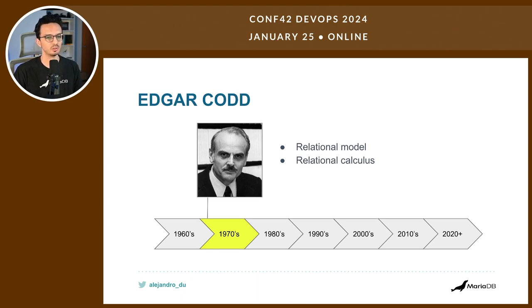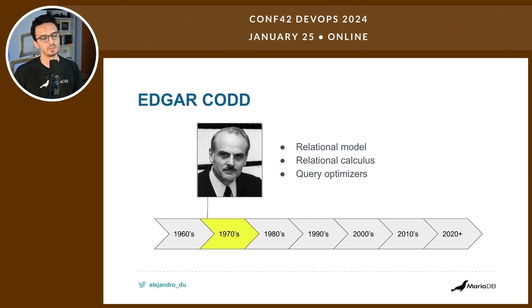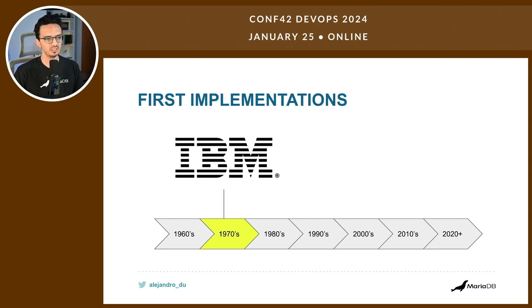Edgar Codd was a mathematician, so he formalized the relational model through relational calculus and relational algebra, which is the basis modern databases use — though they've added more concepts since. This theory allows you to demonstrate that it is possible to build query optimizers. A database contains tons of algorithms and data structures like trees and hash tables, and because it knows your data, it can make much better decisions on how to access data on disk than a programmer could.